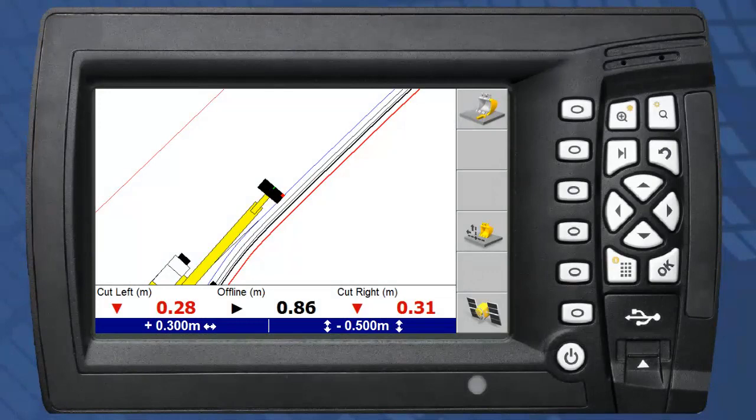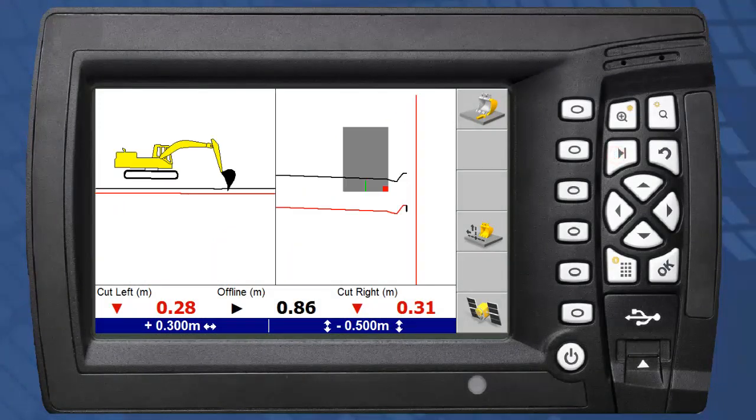Tabbing to the cross section view, we can see that the line has been offset behind the kerb. This concludes the introduction to Trimble's GCS900 CB460 control box.